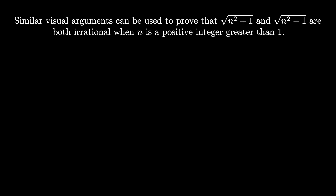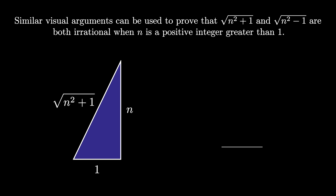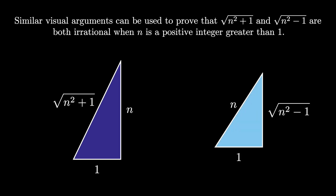A similar geometric argument works to prove that the square root of n² + 1 and the square root of n² − 1 are both irrational when n is a positive integer greater than 1, by using these right triangles: one with legs of length 1 and n and hypotenuse of square root of n² + 1, and the other with legs of length 1 and square root of n² − 1 and hypotenuse of length n. Can you verify the details?